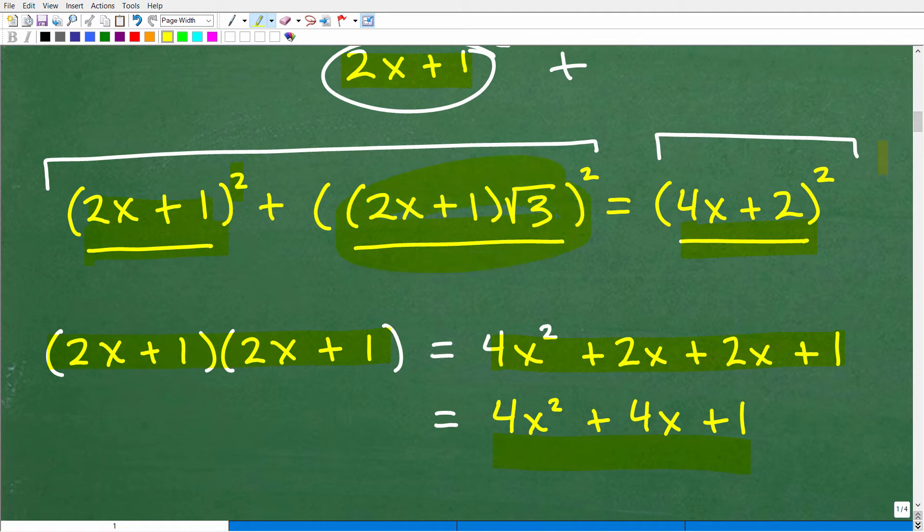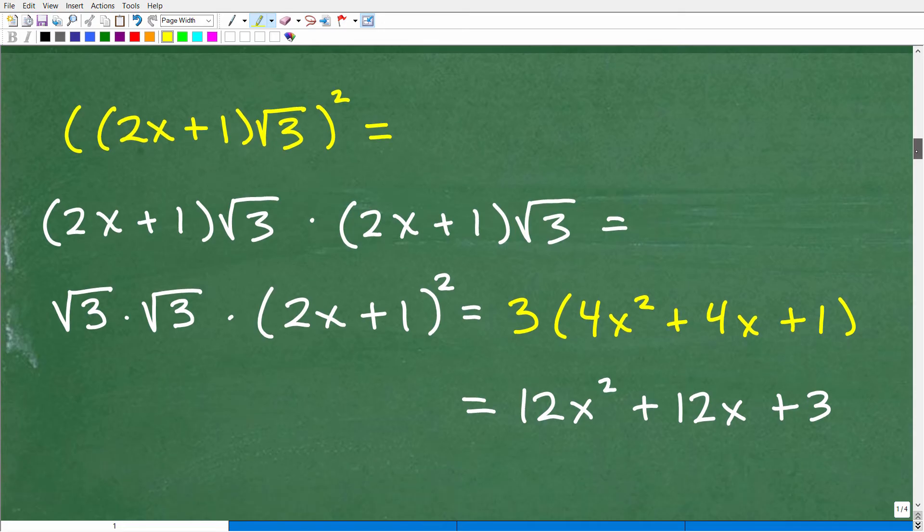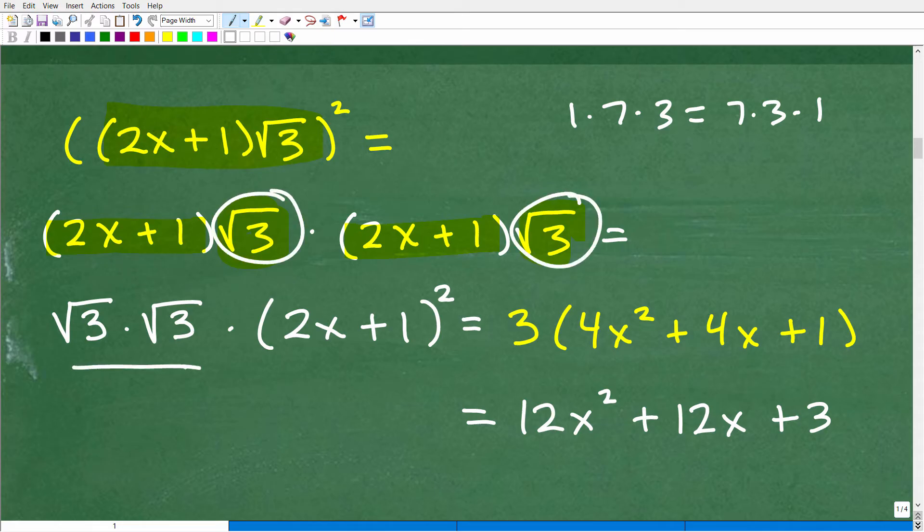So let's take a look at doing this next. Okay, so we're going to check on (2x+1)√3 squared, all right? What's that equal to? Well, that's 2x+1 times the square root of 3 times 2x+1 times the square root of 3. Now, remember, in multiplication, order doesn't make a difference. 1 times 7 times 3 is equal to 7 times 3 times 1. Okay, so we could shuffle things around. So I'm going to put these two square root of 3s next to one another, and then I'll put the 2x+1 times 2x+1 next to one another.